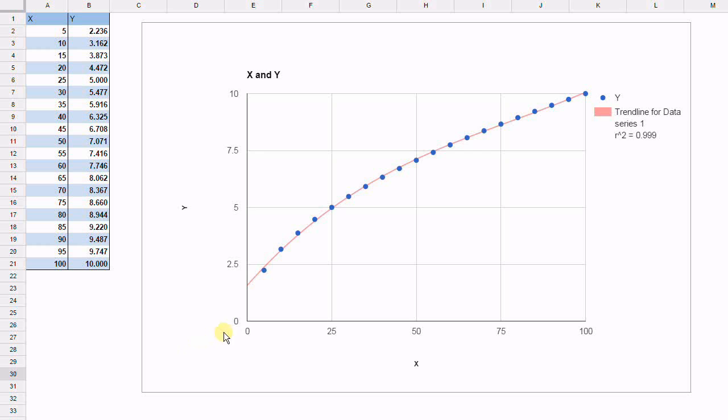Now here we have a much better fit. As you can see, the trendline seems to cut through most of the data. The R squared now is 0.999, extraordinarily close to 1. And we would say that's a very, very good fit for the data.